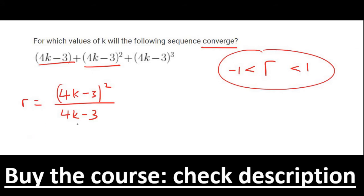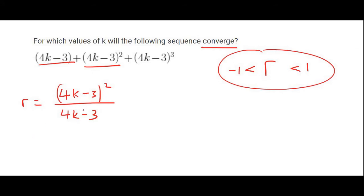Now, what you should realize is that 4K minus 3, there are two of them, and then there's one of them at the bottom. And so we could cancel one of the 4K minus 3's at the top and the one at the bottom. And so you're going to be left with R as equal to 4K minus 3.